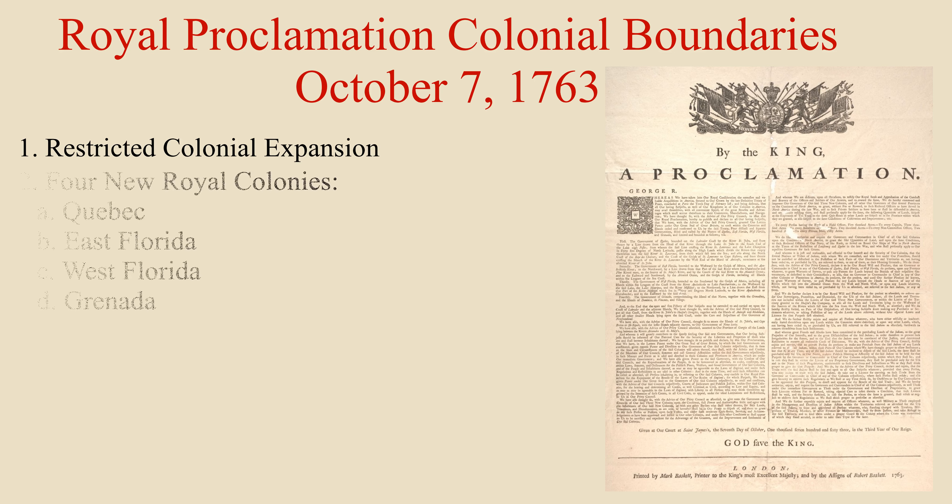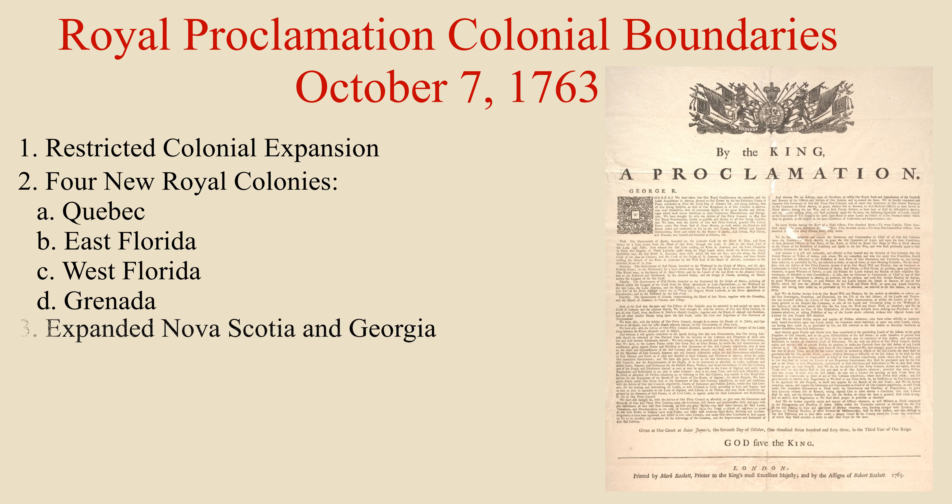At the beginning, the proclamation established four new English colonies: Quebec, East Florida, West Florida, and Granada. The English also added several islands to the colony of Nova Scotia, and expanded Georgia's territory westward.